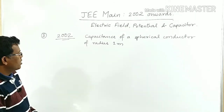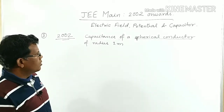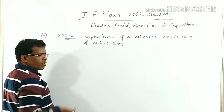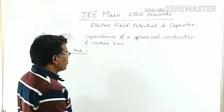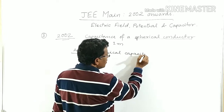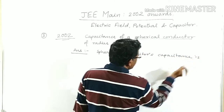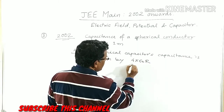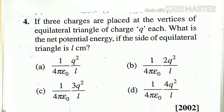The third question from 2002 is about a spherical conductor whose radius is given as 1 meter. We have to find the capacitance of this spherical capacitor. The answer is very simple — we just use the formula for spherical capacitor capacitance, which is given by C = 4πε₀r. Simply substituting the value of 4πε₀ and r = 1 meter gives the answer directly.